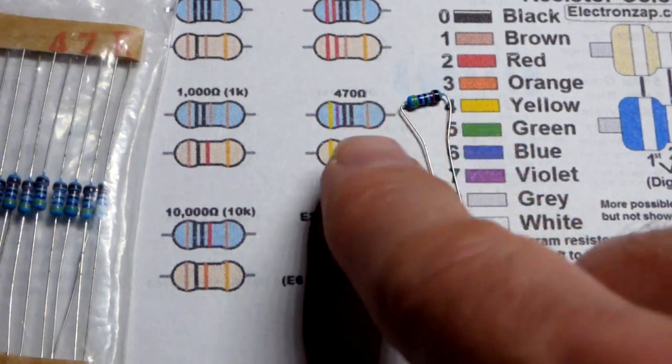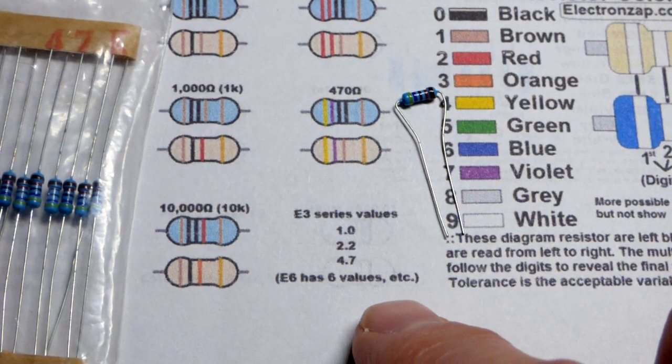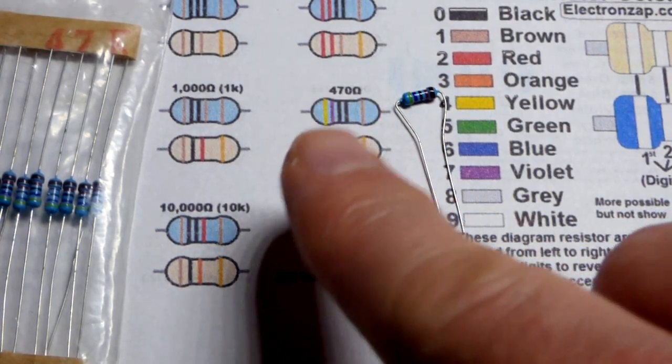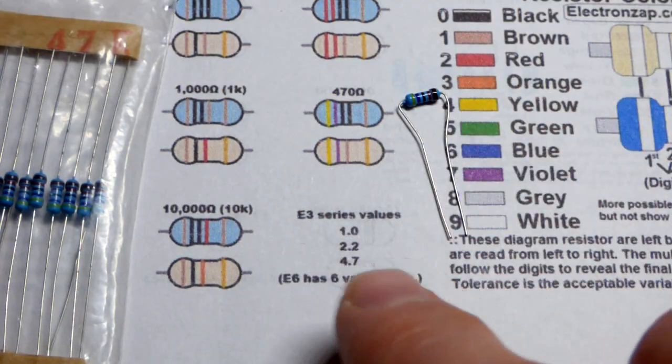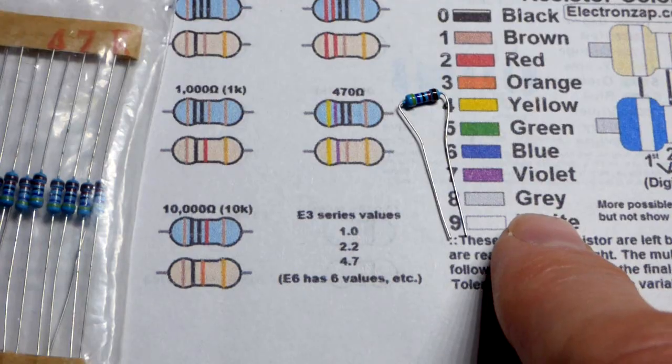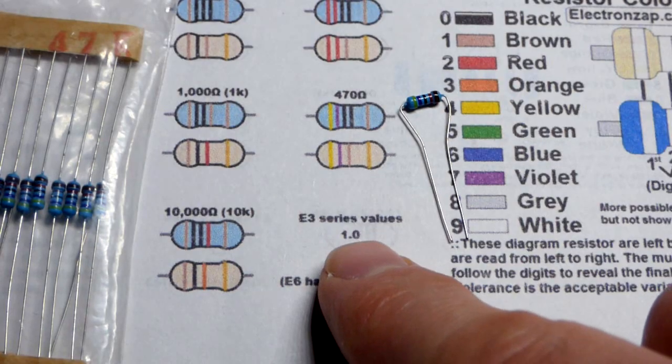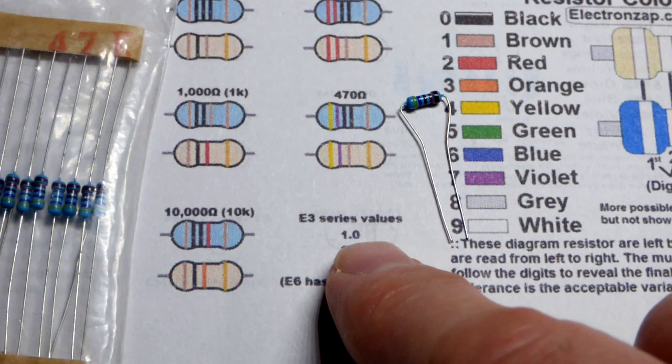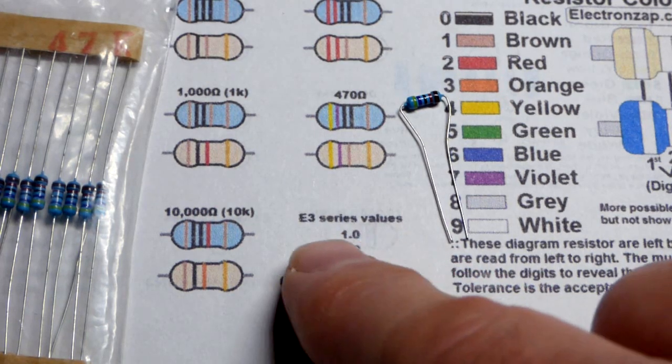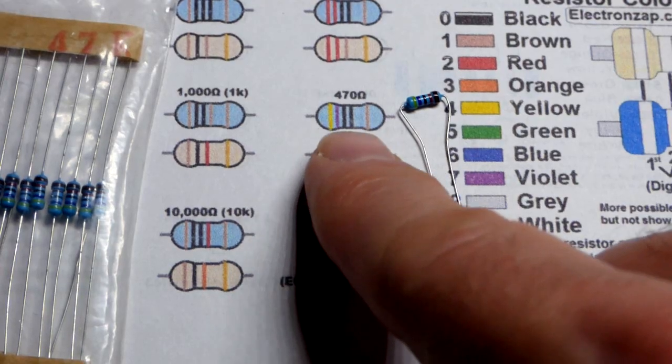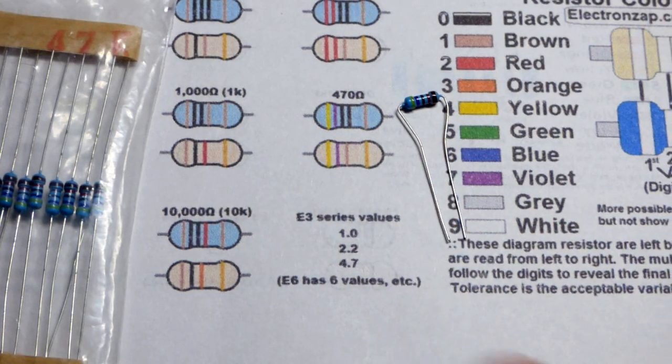As time went on they started making resistors that begin with other digits. Same process though, they can have more zeros. Also there's colors I believe it's gold and silver where they're in the multiplier that's less than multiplying by one. It's like 0.1 for one of them and 0.01 for the other one. You get smaller than what you see on those three digits right there. You could get a single digit or the tens.